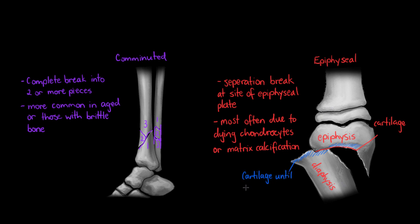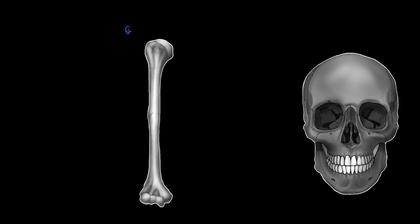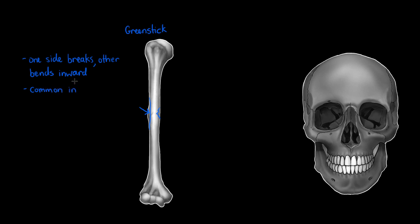Moving on to our last two common fracture types. The first is called a greenstick fracture, which is very common in children. This is where there is an incomplete break of bone — while one side has a minor fracture, the opposing side simply bends inward. This is due to the fact that younger people have a much more organic bone matrix that is far more flexible and resistant to severe breakage. So one side bent inwards while the other bent outwards, causing a minor break.